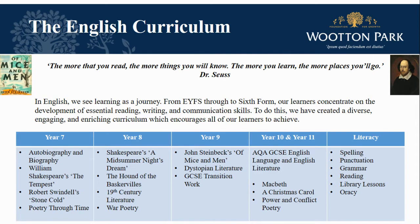As our learners move into year ten we start on the GCSE in English language and literature fully. Paper one and paper two explore fiction and non-fiction texts and concentrate upon the development of reading and writing skills, and we also look at the non-exam assessment which is a spoken language presentation. Some of the literature texts that we explore are Macbeth, A Christmas Carol, and the Power and Conflict cluster from the AQA Anthology.